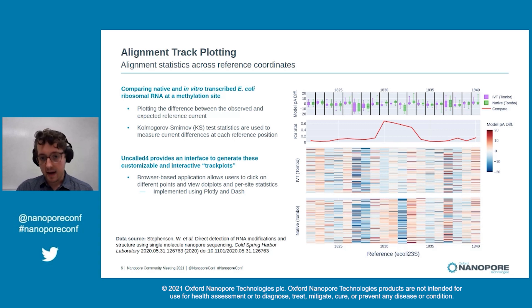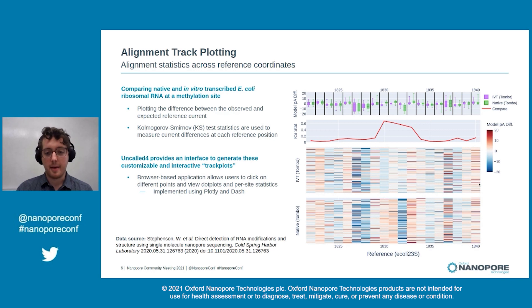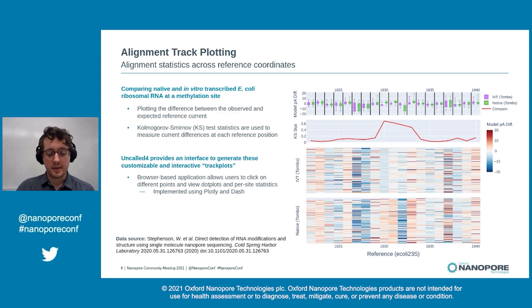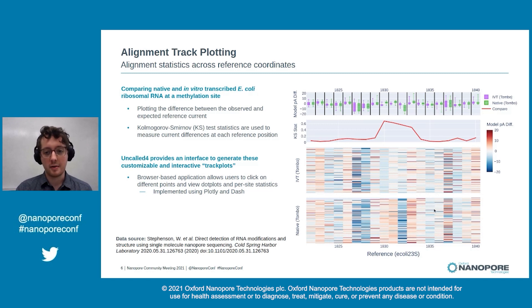Uncalled4 allows you to make these analyses with any alignment method, and it's highly customizable — you can view any different kind of layers, such as the difference between observed and expected current based on the model. You can plot any layer and summary statistics over reference coordinates, and these plots are interactive. We're developing a browser-based application where you can click on different points to view individual alignments and explore differences between samples and methods.